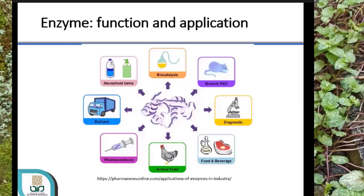Apa kelebihan enzim? Enzim ini kelebihannya adalah dia bisa bekerja secara spesifik. Tapi karena dia suatu protein, sifat-sifat protein yang dibatasi oleh pH maupun suhu tertentu itu juga dimiliki oleh enzim. Sehingga enzim ini biasanya hanya akan bekerja pada pH dan suhu yang tertentu, dan akan bekerja optimum pada pH dan suhu tertentu itu.